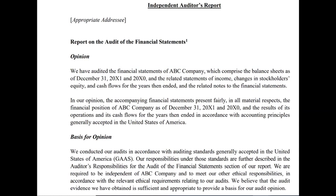You have to know that the opinion section is first. Each section of the new report has to have a label. Notice the label for the first section is 'Opinion.' The second section must have the label 'Basis for Opinion.' It will say something like: we conducted our audits in accordance with auditing standards. Our responsibilities are further described in a different section known as the Auditor's Responsibility section, so we're not going to get into our responsibilities here in the basis for opinion section.